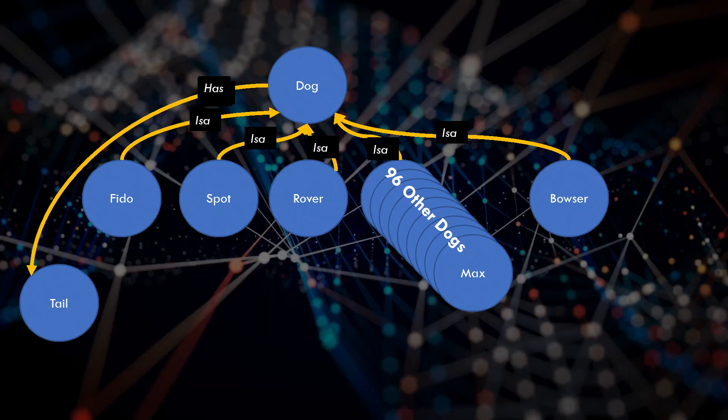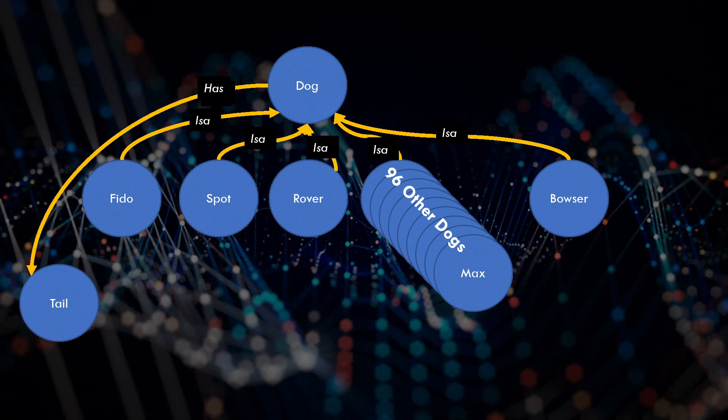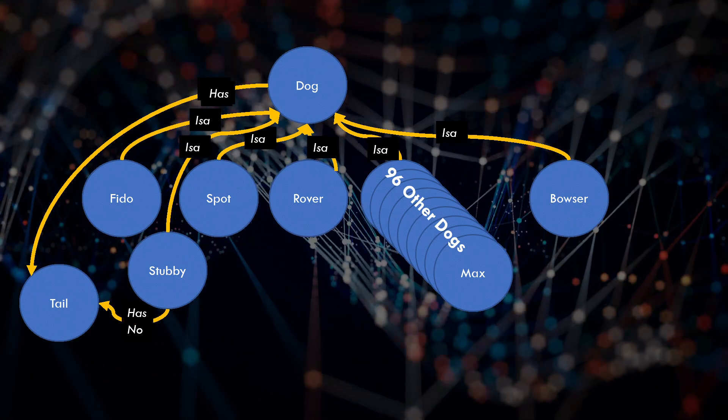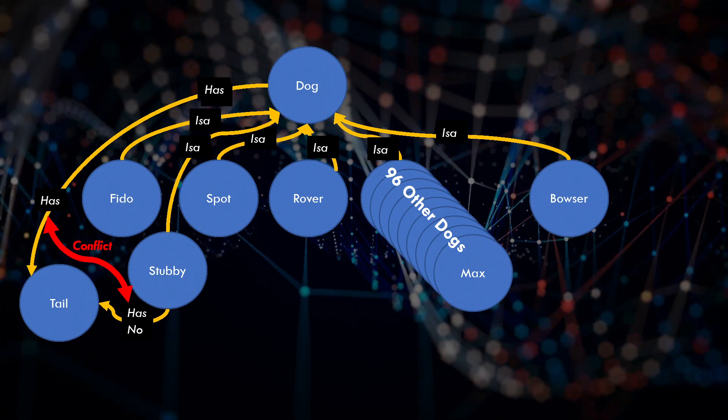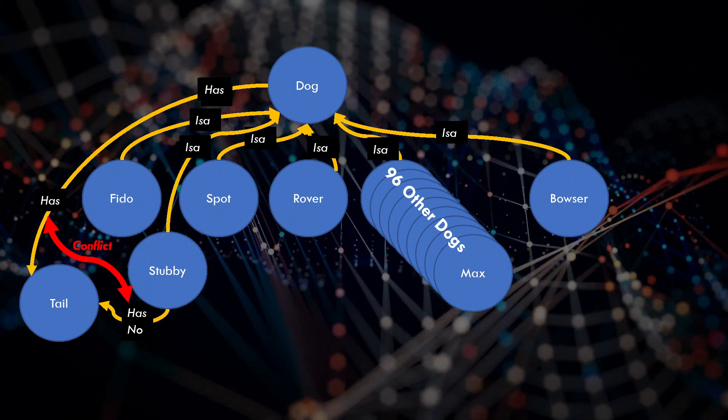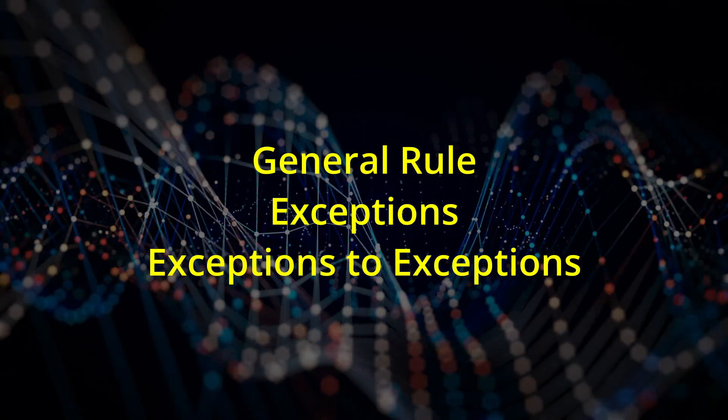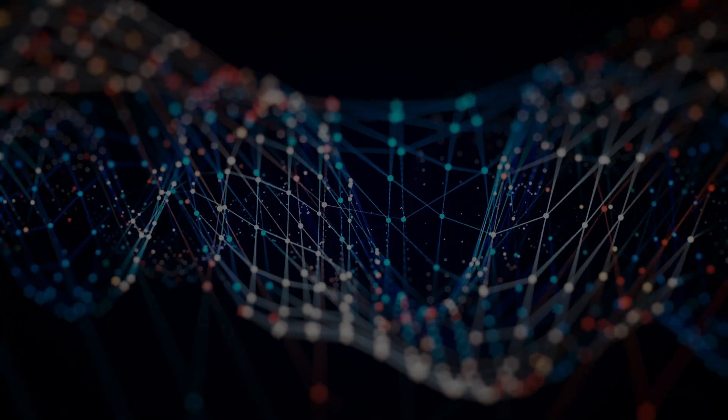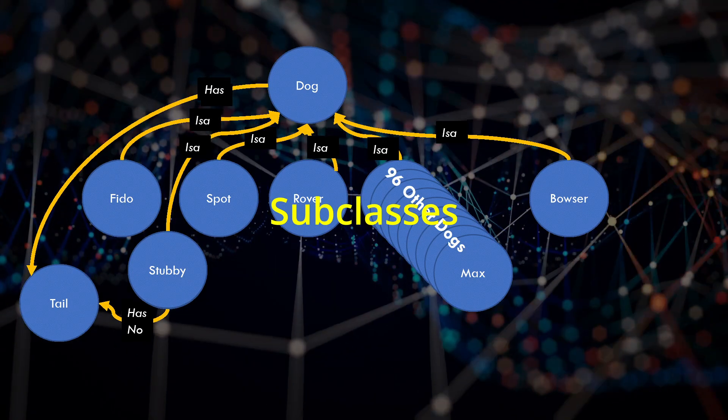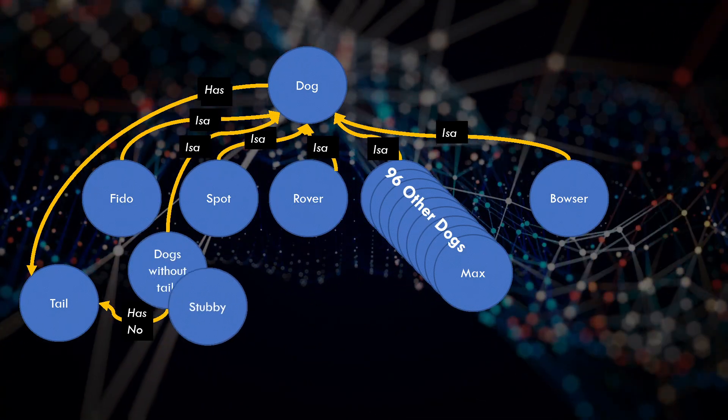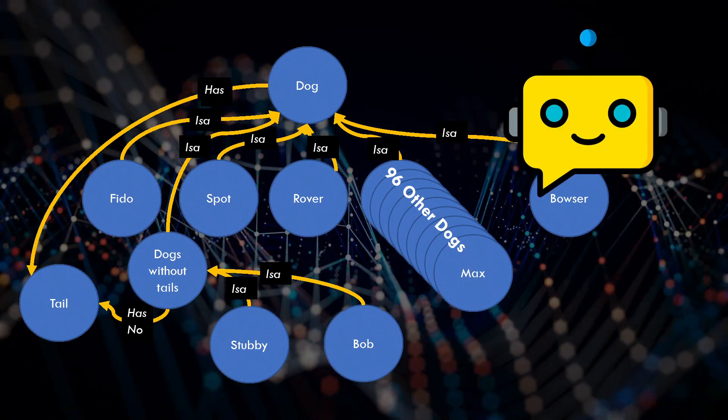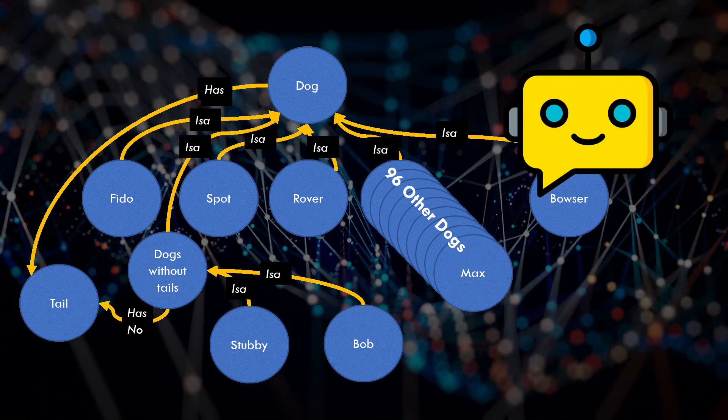But some dogs don't have tails. How can we represent that? Simple. Just add a has no tail relationship to the dog things without tails. When the hierarchy is traversed, conflicting relationships will override their inherited counterparts. This applies at all levels, so you can have a general rule, exceptions, and exceptions to the exceptions. As an alternative, there could be a subclass of dogs which have no tails, and Stubby and Bob could be made members of that subclass. We have an agent that automatically does this too, depending on the number of things which share the exception.